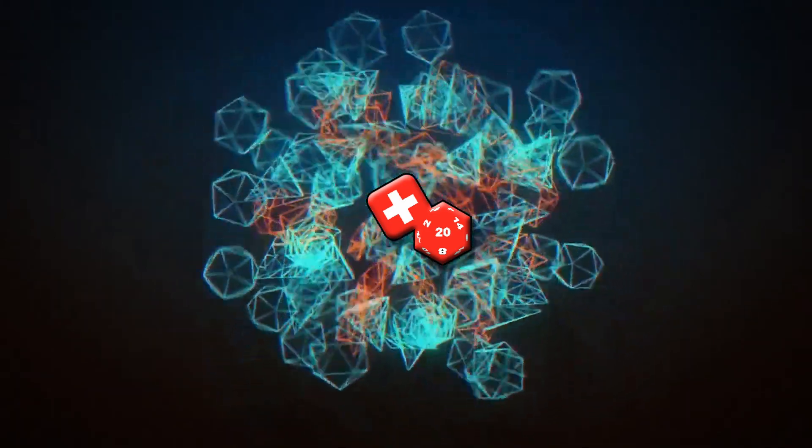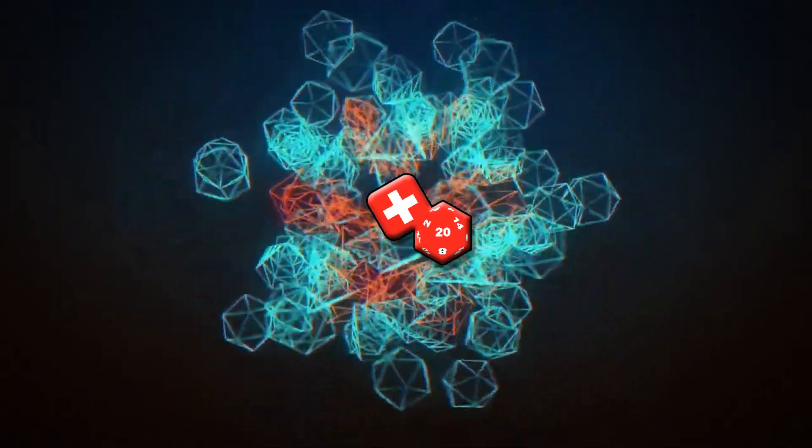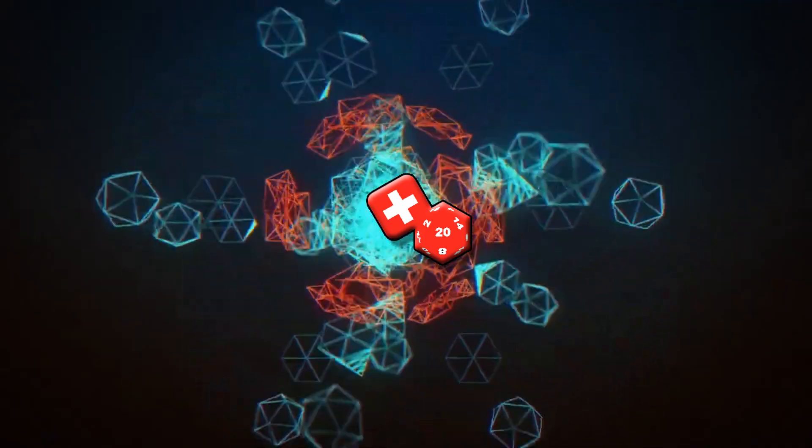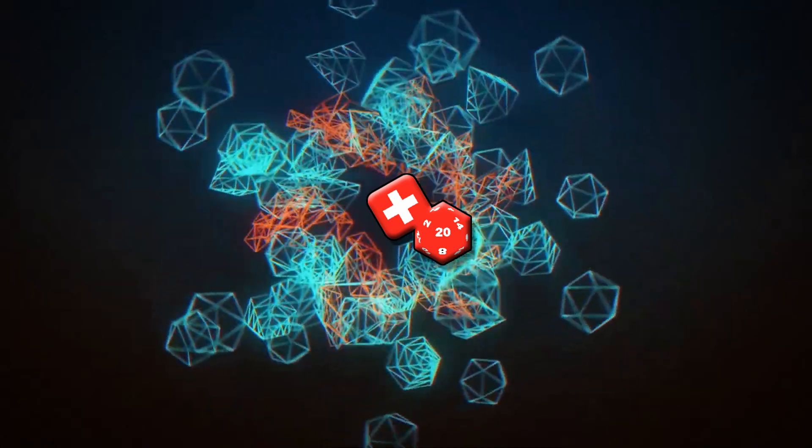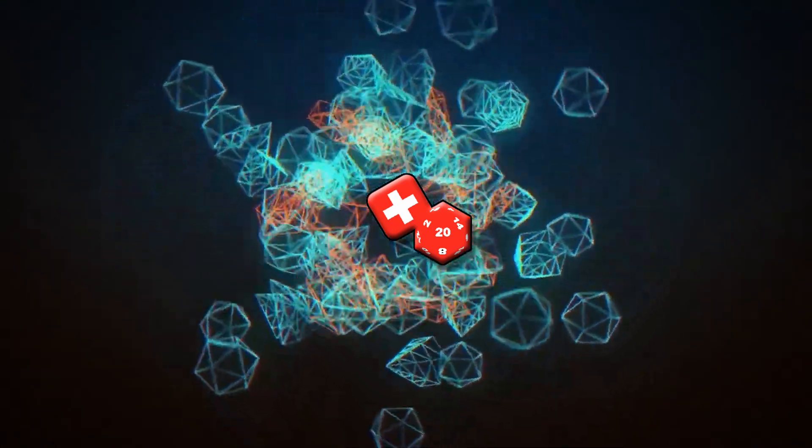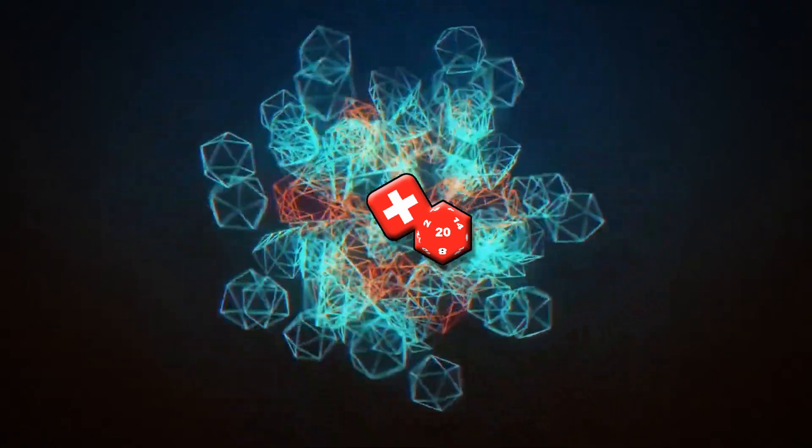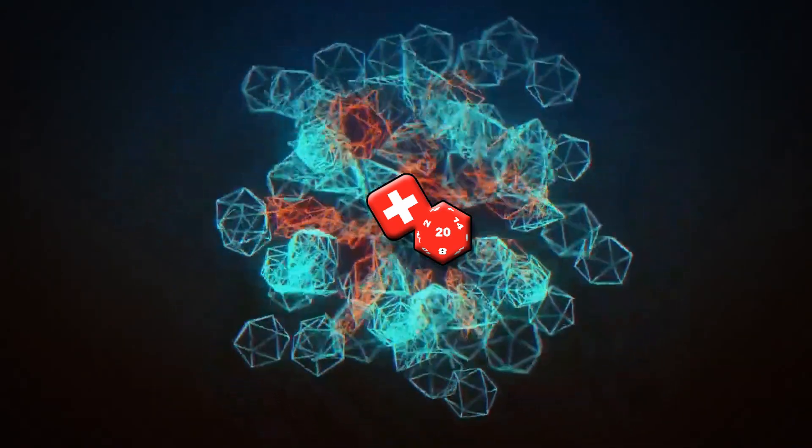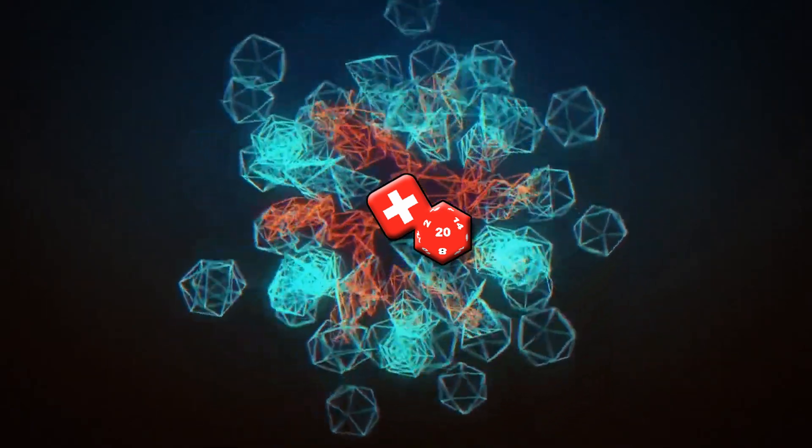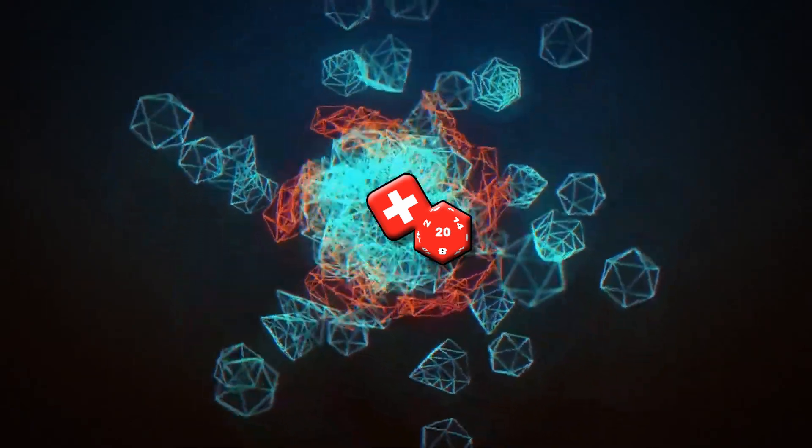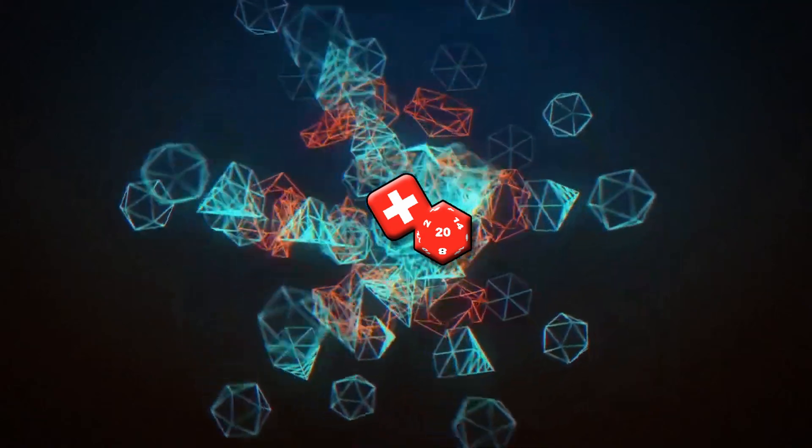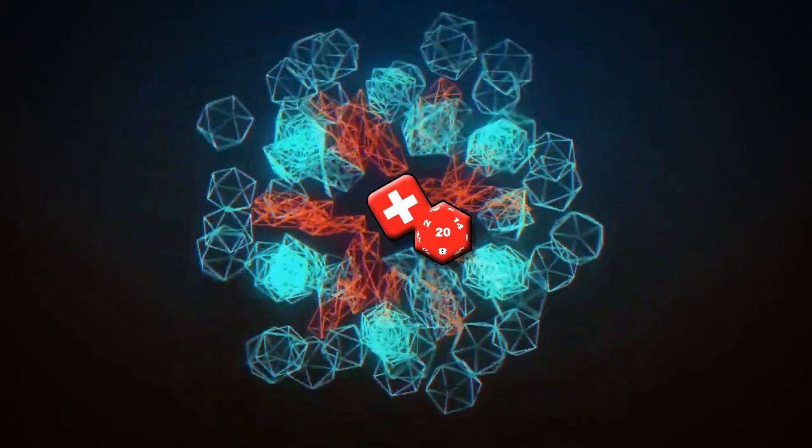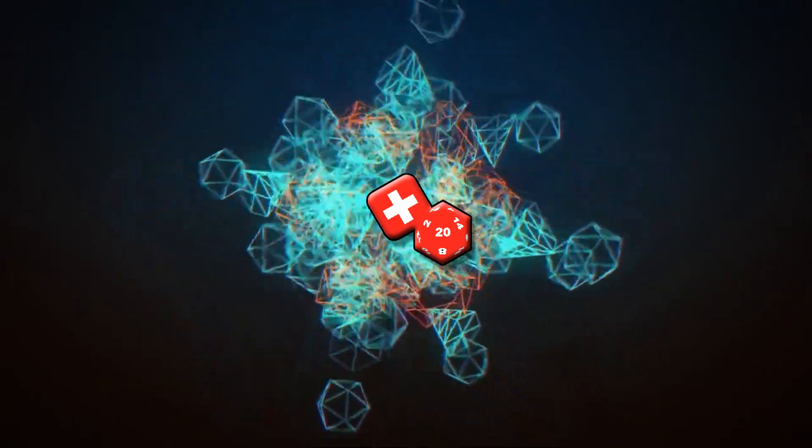This stat is roll under and based on the roll of 1d6. Thieves succeed on a 1 or 2 at first level, rising to a 1 to 5 chance of success by level 10. You don't have to look up separate special skills if you're climbing a wall or picking a pocket. If you're a thief and you're doing something thiefly, just roll that 1d6, and if you get below the number, you're good. I love this. It's nice and simple, and the skill is vague enough that there's wiggle room and space for sensible judgment calls.